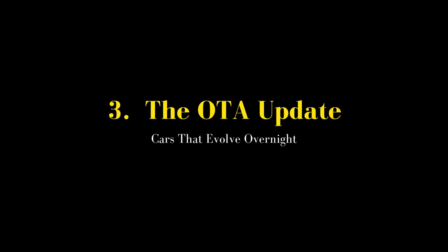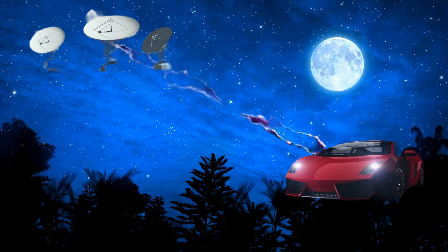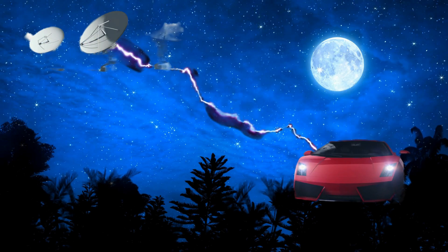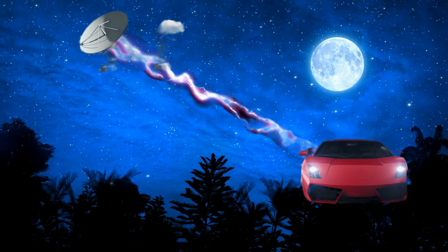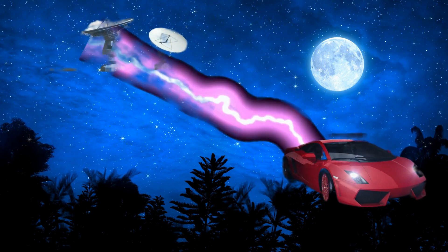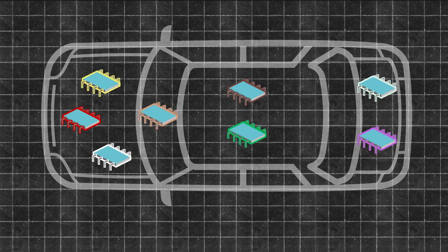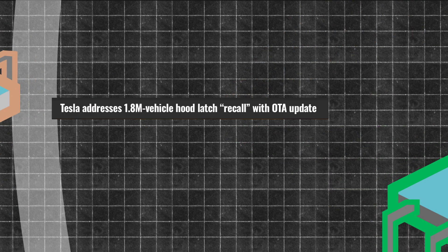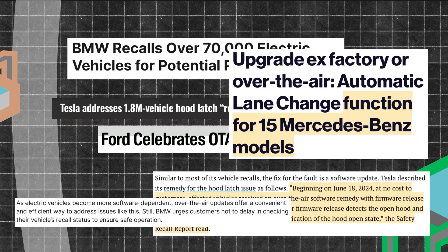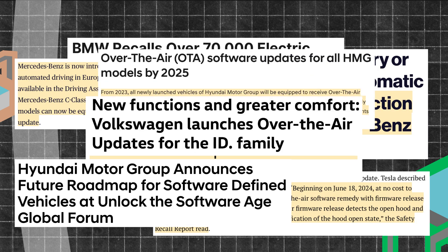And here's where it gets wild. Thanks to DOIP, your car can receive software patches while you sleep — say goodbye to old-school recalls. DOIP allows OTA flashing of individual ECUs over a secure Ethernet backbone, ensuring the right software goes into the right module. It's not sci-fi; it's what's happening already in Tesla and many other cars.